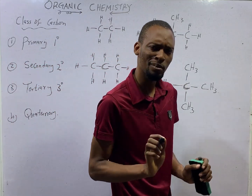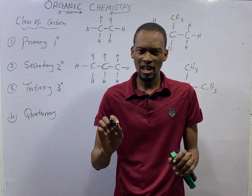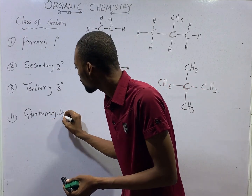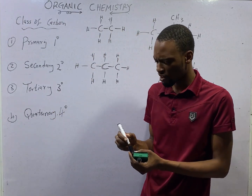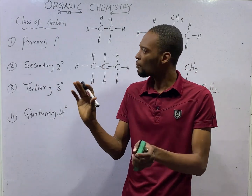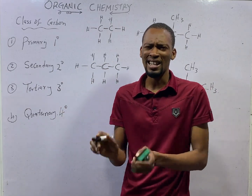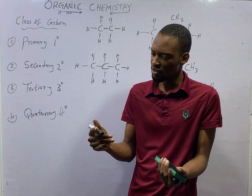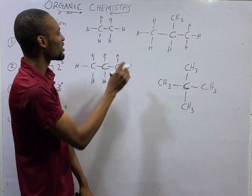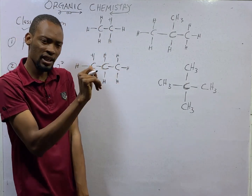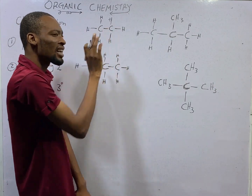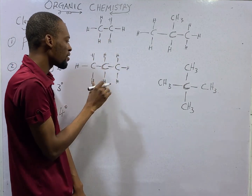What is primary carbon? Primary carbon is simply any carbon that does not have any other carbon attached to it, or that has a maximum of one carbon atom attached to it. In this compound, you can see this carbon has only one other carbon attached to it — this is the primary carbon. Similarly, this carbon also has just one other carbon attached to it, making it primary carbon.